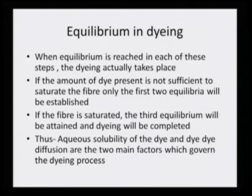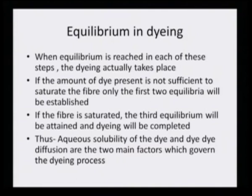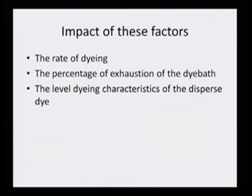Aqueous solubility of the dye and the dye diffusion are the two main factors which govern the dyeing process. In polyester dyeing, these two factors are very important — the first equilibrium is governed by dissolution of the dye, and the second by diffusion following adsorption. Unless and until the dye is adsorbed, it will not be diffusing into the core of the fiber. The rate of dyeing will be affected because everything depends on these three factors: dissolution, adsorption, and penetration.